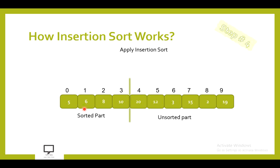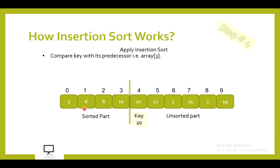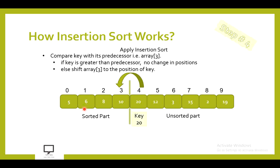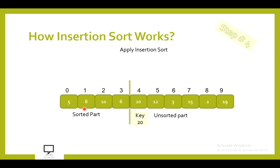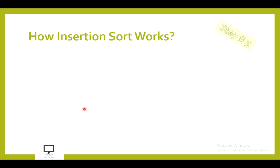In step 4, we make array[4] the key element, which is 20. We compare 20 with its predecessor array[3]. Key is greater than predecessor — yes. No shifting is required. We simply move the imaginary line to the next position to indicate that the sorted array now has 5 values and the unsorted array has the remaining 5 values.